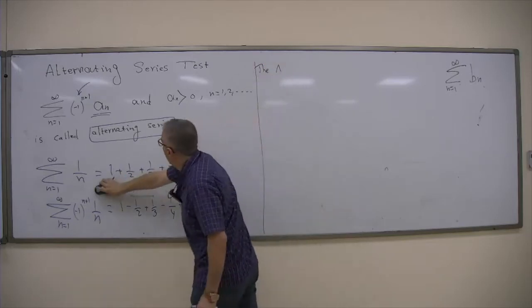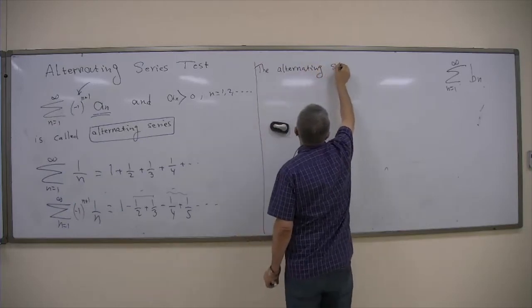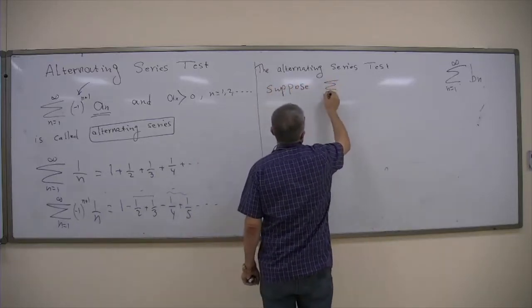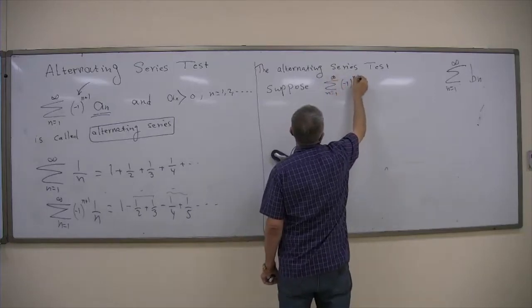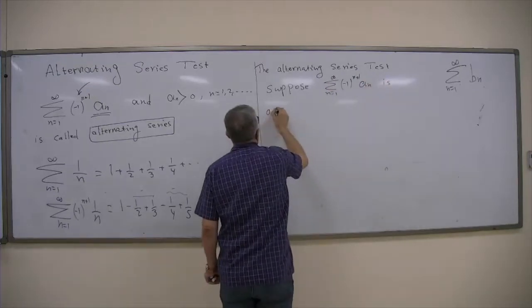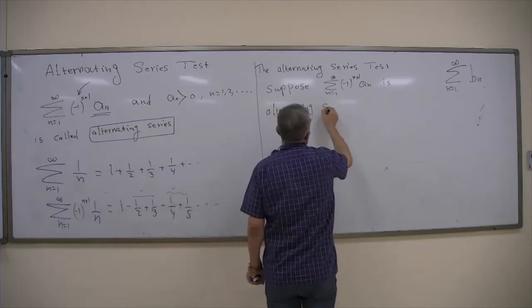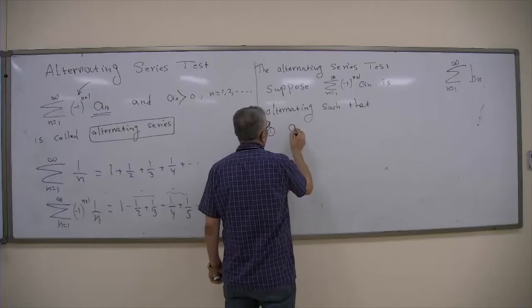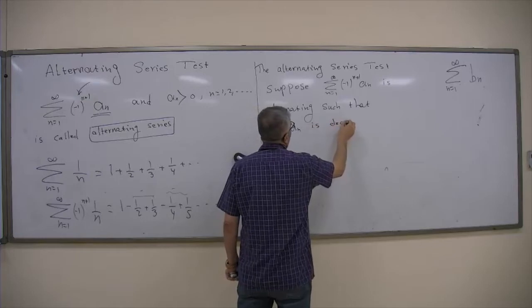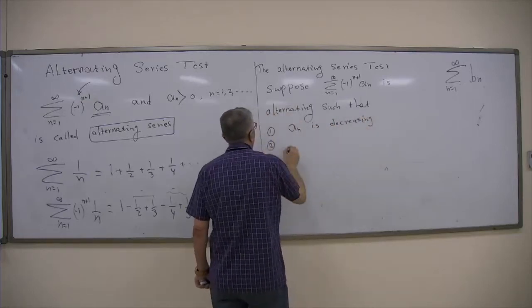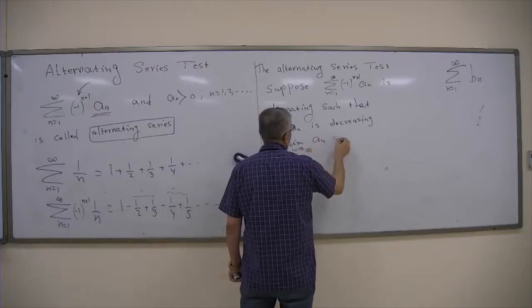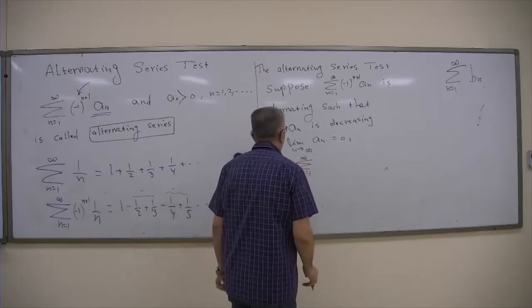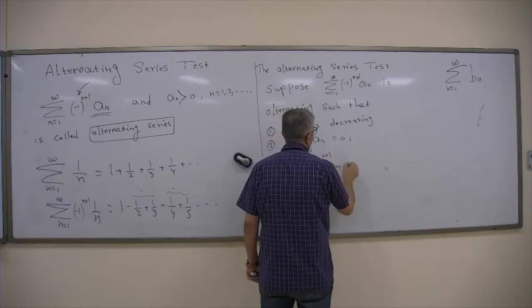The Alternating Series Test: Suppose the summation from n equals 1 to infinity of (-1)^(n+1) · a_n is alternating, such that: (1) a_n is decreasing, and (2) the limit of a_n as n goes to infinity is zero. Then the summation from n equals 1 to infinity of (-1)^(n+1) · a_n is convergent.